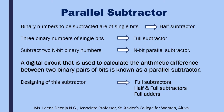But if we want to subtract two n-bit binary numbers, then we need an n-bit parallel subtractor. A digital circuit used to calculate the arithmetic difference between two binary pairs of bits is known as a parallel subtractor. The designing of the subtractor can be done in different ways — using combinations of full subtractors, half and full subtractors, or full adders. In this class, we are going to study how a parallel subtractor is designed using full adders.